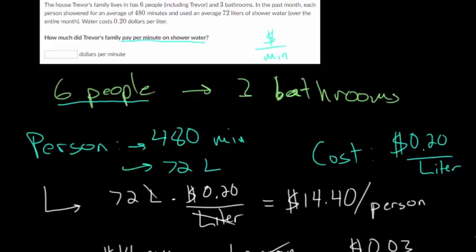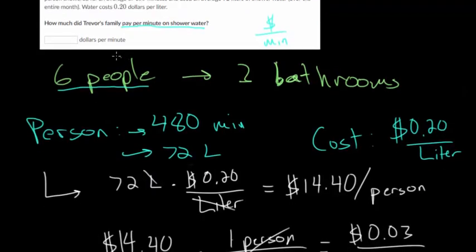If we go back up to our problem, how much did Trevor's family pay per minute on shower water, you would put in 3 cents or $0.03 per minute.